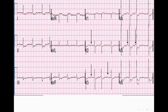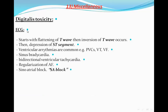What about digitalis toxicity? The ECG in digitalis toxicity will start with flattening of the T wave, then inversion of the T wave occurs, then depression of the ST segment will ensue. Up to this point we call it digitalis effect, but if ventricular arrhythmias occur — like PVCs or VT — we begin to call it toxicity.